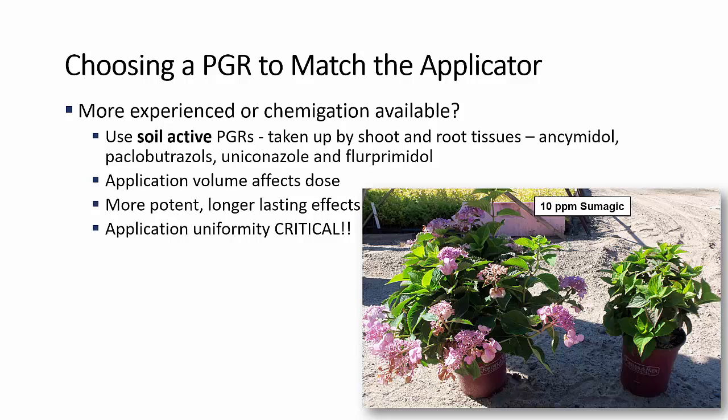Therefore, the application uniformity is critical. As you see in this picture of hydrangeas where they were all treated with 10 parts per million Sumagic — you do not want that much variability in your response. It comes down to the application uniformity.